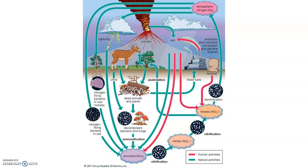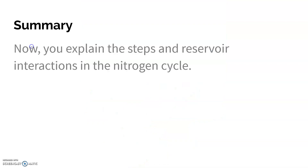If there are a lot of nitrates in the water, plants and algae are going to grow and grow and grow. That's how we get algae blooms. I'll talk about that more when we get to the phosphorus cycle, because it's a similar process.